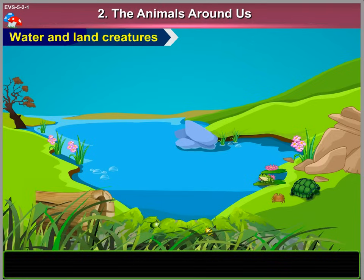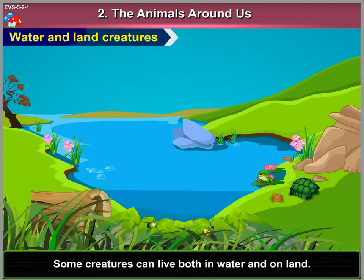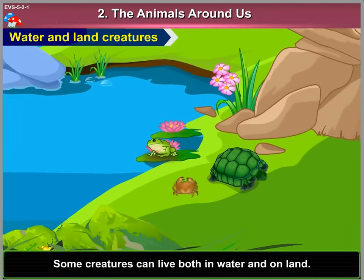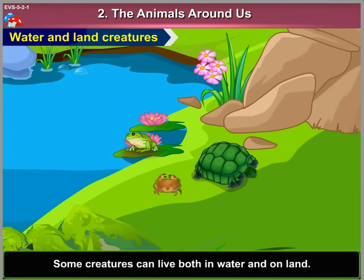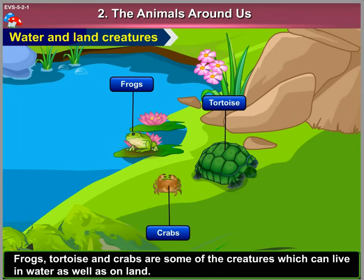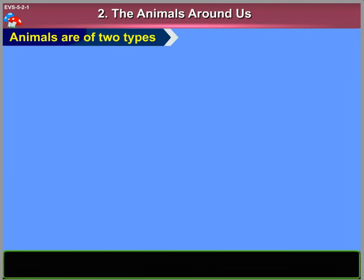6. Water and Land Creatures. Some creatures can live both in water and on land. Frogs, tortoises and crabs are some of the creatures which can live in water as well as on land.